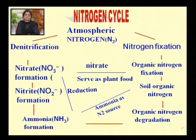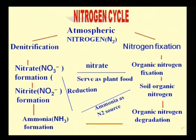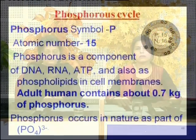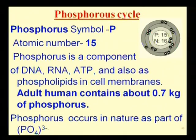Now we move to the phosphorus cycle. Phosphorus is an important element of ATP, DNA, RNA, and it also forms phospholipids in cell membranes. A human body contains about 0.7 kilograms of phosphorus. In nature, phosphorus basically occurs as part of phosphates.